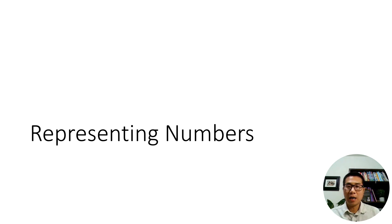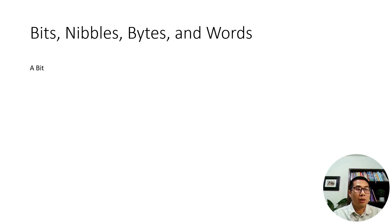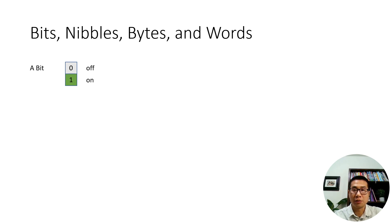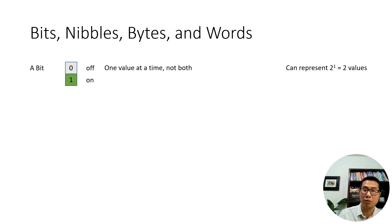Now we're going to learn how a computer represents numbers. We're going to use bits, nibbles, bytes, and words to represent numbers. First, what is a bit? A bit is a computer unit that can represent either zero or one — zero is the off state and one is the on state. It can only represent one value at a time, but it can represent two different values: zero or one, or 2 to the power of 1.